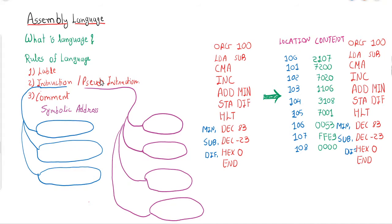Hello students. In the previous tutorial we discussed the introduction and saw different types of representations of a program — binary, hexadecimal, assembly language, and higher-level programming language. We understood how the same program can be represented at different levels. In this tutorial we will start our discussion with assembly language.